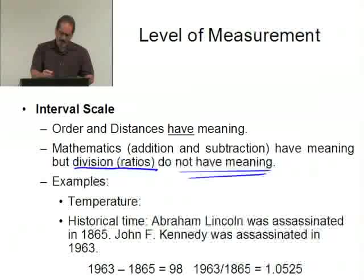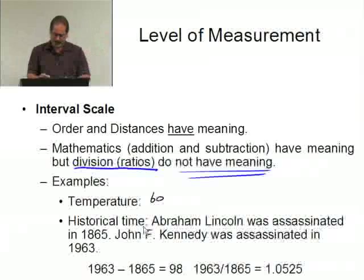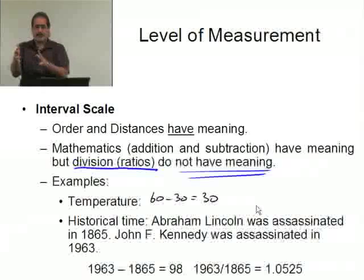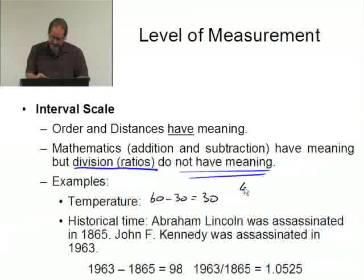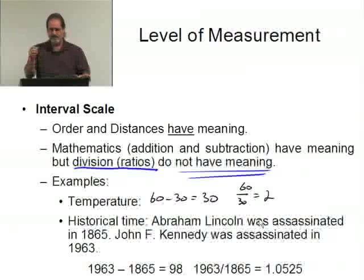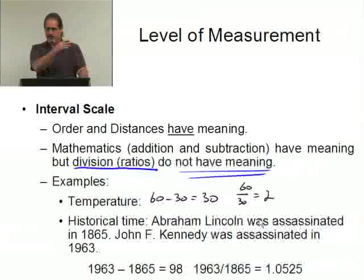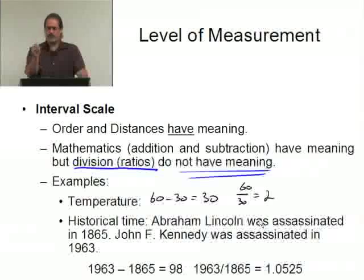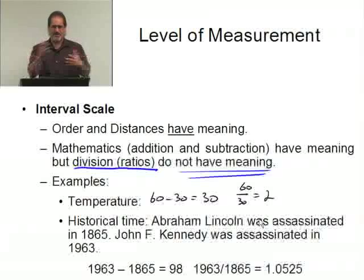Take temperature as an example. If it's 60 degrees and I drop it to 30 degrees, 60 minus 30 equals 30 — it really did drop 30 degrees. But if I take 60 divided by 30, that equals 2. Did it get twice as cold? What does it mean to get twice as cold? If I was at 100 and dropped to 50, 100 divided by 50 is 2 — would that be twice as cold? The subtraction makes sense; everybody understands dropping 30 degrees. But the ratio concept doesn't have a lot of meaning.